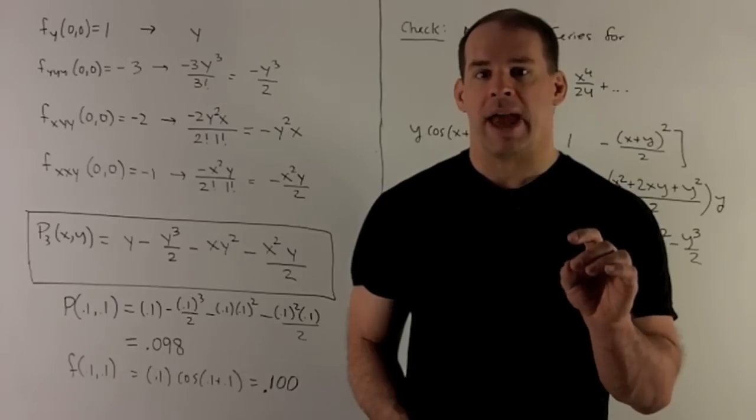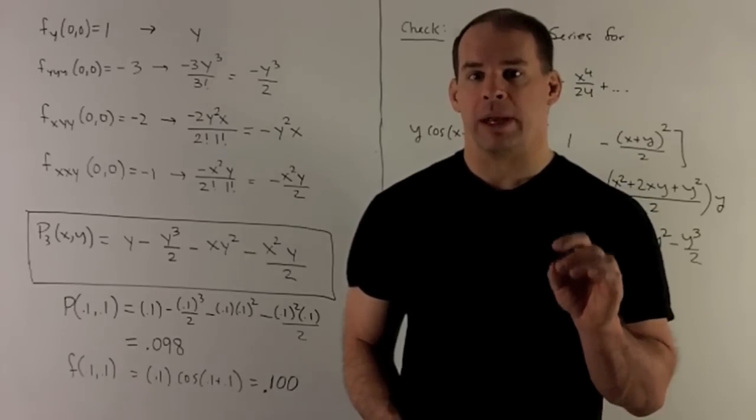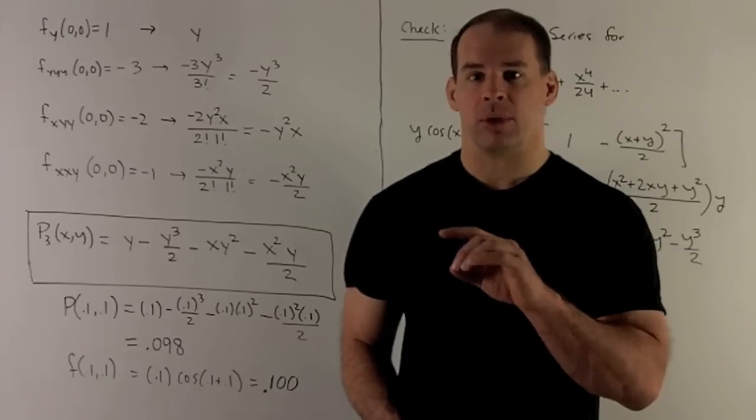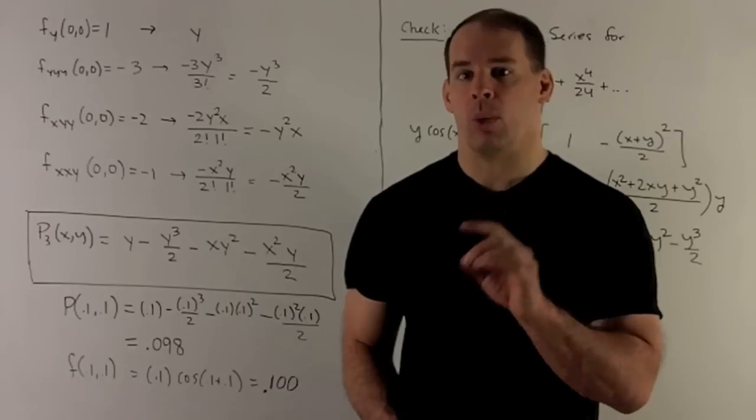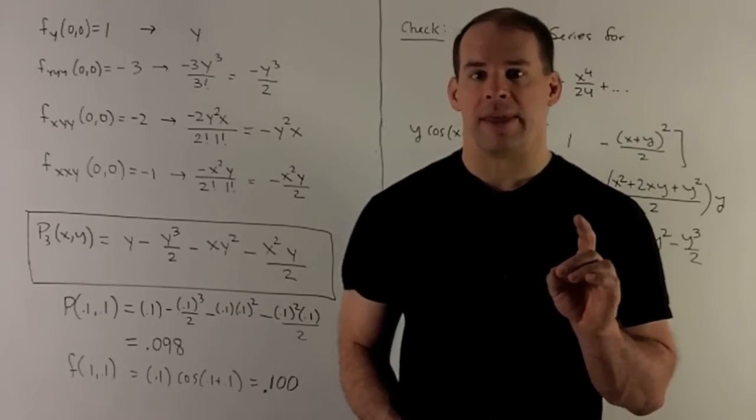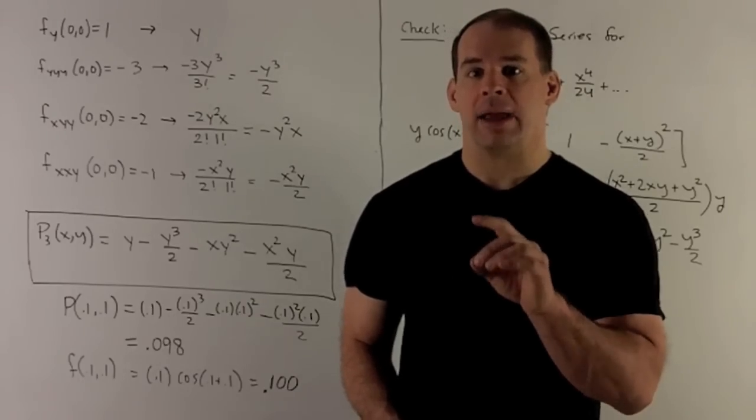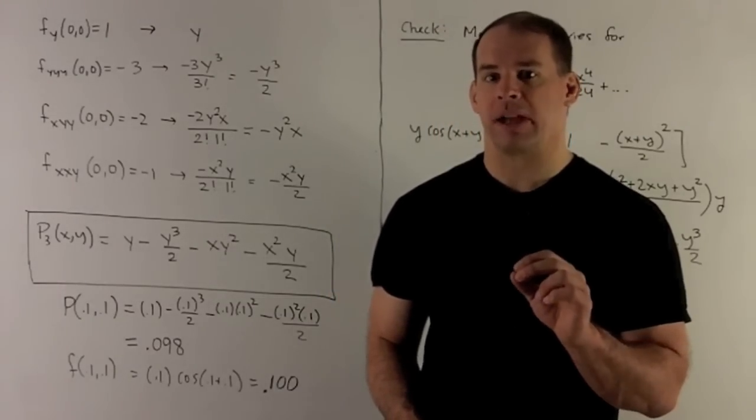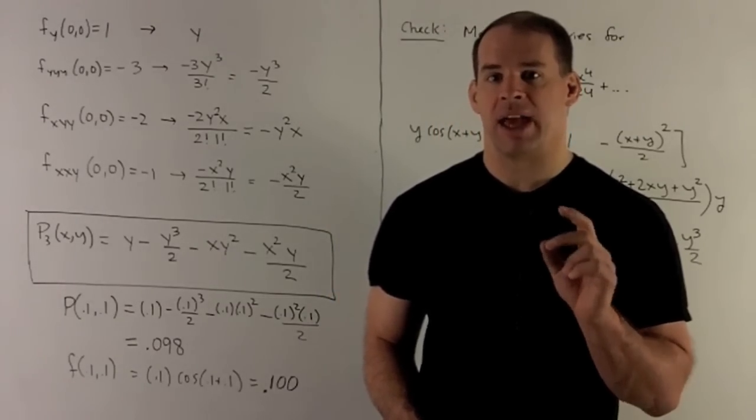Partials, 1 in x, 2 in y, we get a -2. So we're going to have x times y^2. Then we're going to divide by 2 factorial, 1 factorial. That's going to be 2 in y, 1 in x. So what do we get? 2 factorial is 2, 1 factorial is 1. So we get a -xy^2.